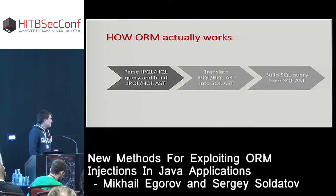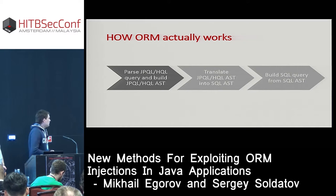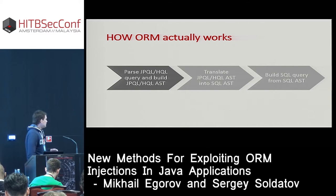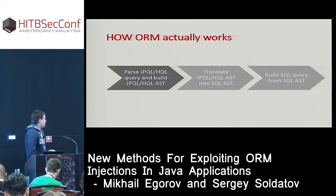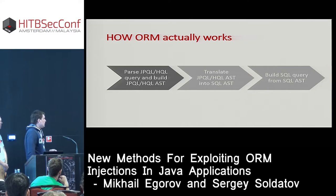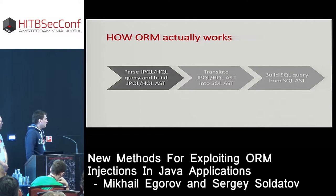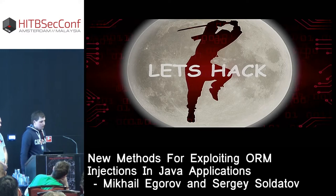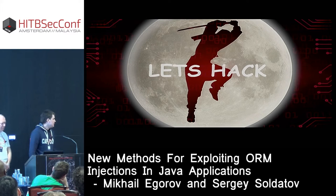Before discussing exploitation techniques, let me show how an ORM library works in general. There are three main steps. First, the ORM library parses the JPQL or HQL query and builds a JPQL or HQL abstract syntax tree (AST). Then it translates the JPQL AST into a SQL AST. Finally, it builds the SQL query from the SQL AST.